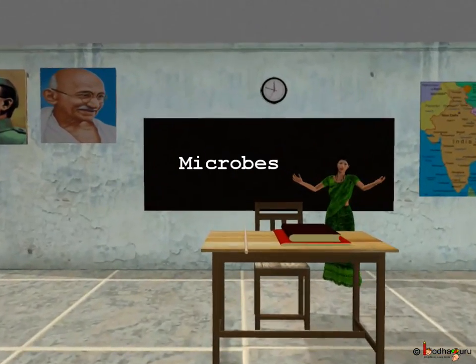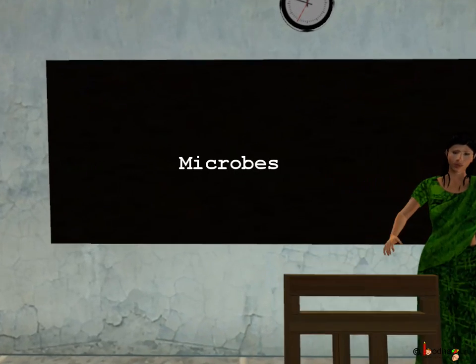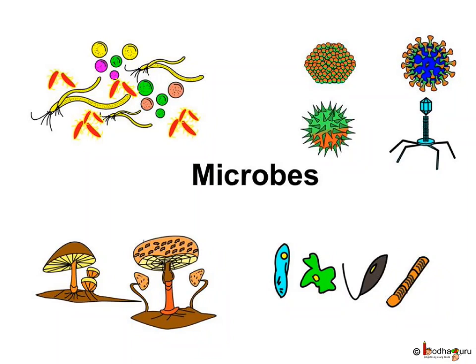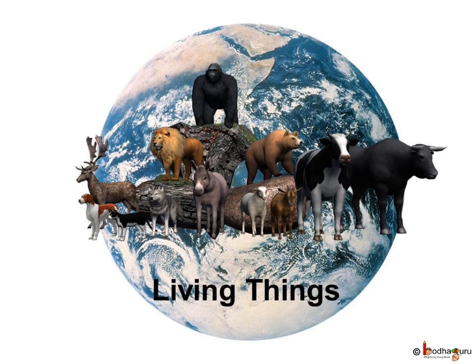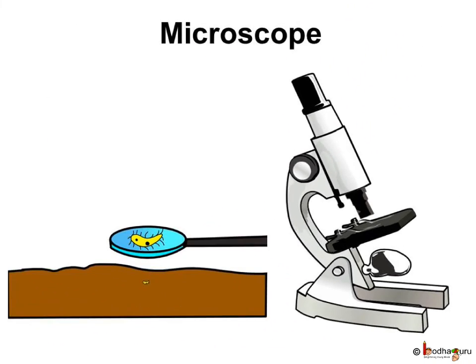Today, we will learn about a very different kind of living thing — microbes. What are microbes? How are they different from the other living things? Let us understand this. We have seen many different types of living things around us. Do you know there are many living organisms which we cannot see with our naked eyes? Because they are very tiny.